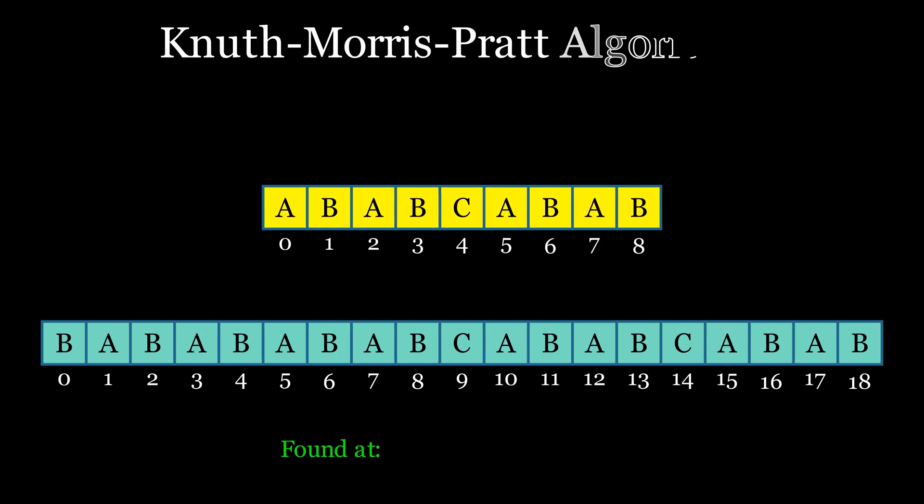The Knuth-Morris-Pratt algorithm, or KMP algorithm, is an efficient pattern matching algorithm used to find instances of a pattern within a given text.